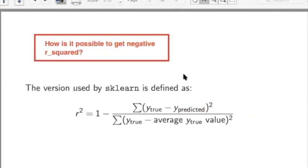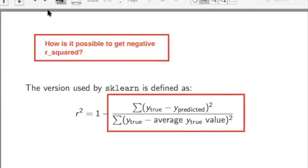So how is it possible to get negative R-squared? Well, if this quantity becomes larger than 1, we're going to be dealing with a negative number. And that's possible for an arbitrary model that your predictions could be way off from your true values. This numerator is controlling how large this number becomes.